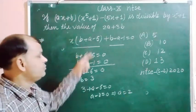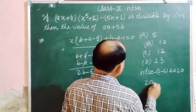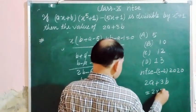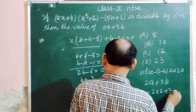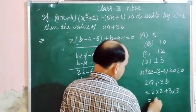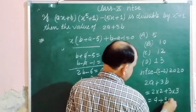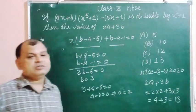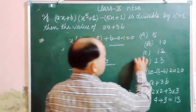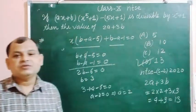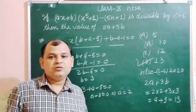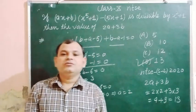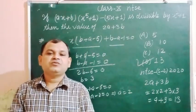Now we find 2A + 3B. Substituting A = 2 and B = 3: 2×2 = 4 and 3×3 = 9, so 4 + 9 = 13. The value of 2A + 3B is 13, which corresponds to option D. I hope you understood this problem from the NTSC Second Stage 2022 exam. Thanks so much!